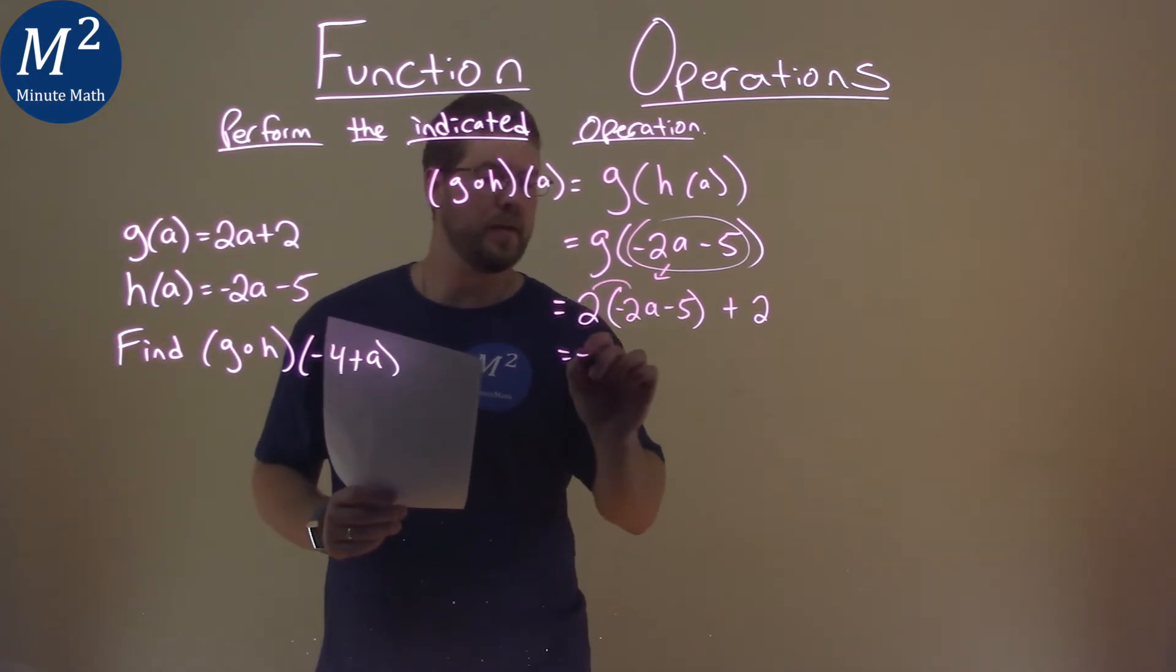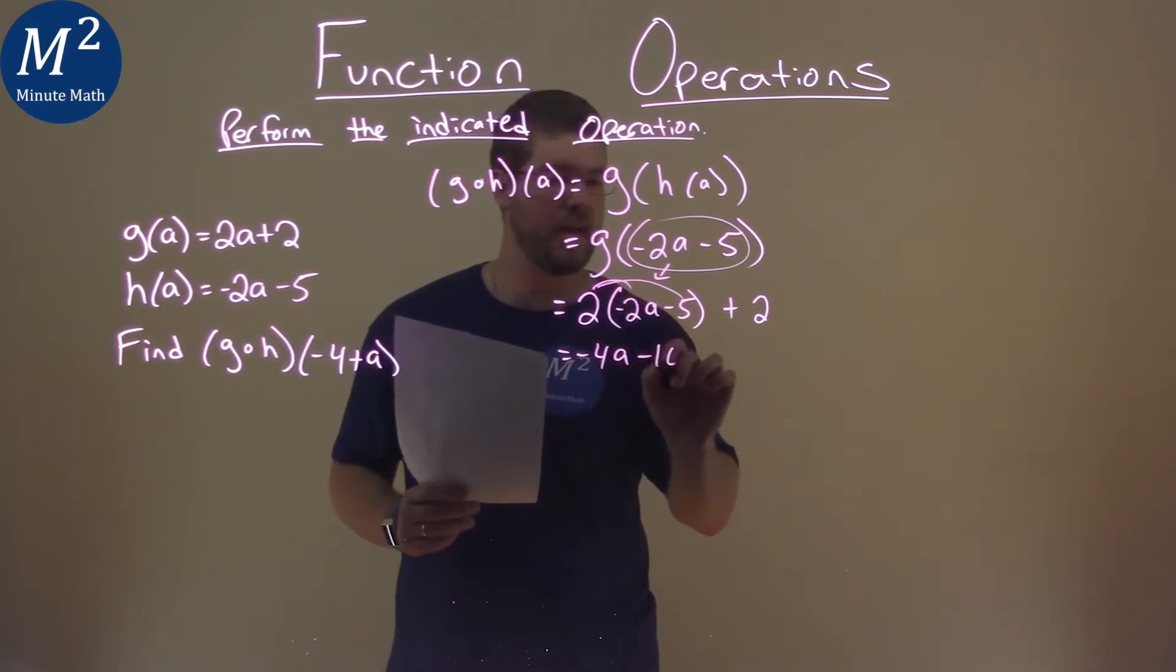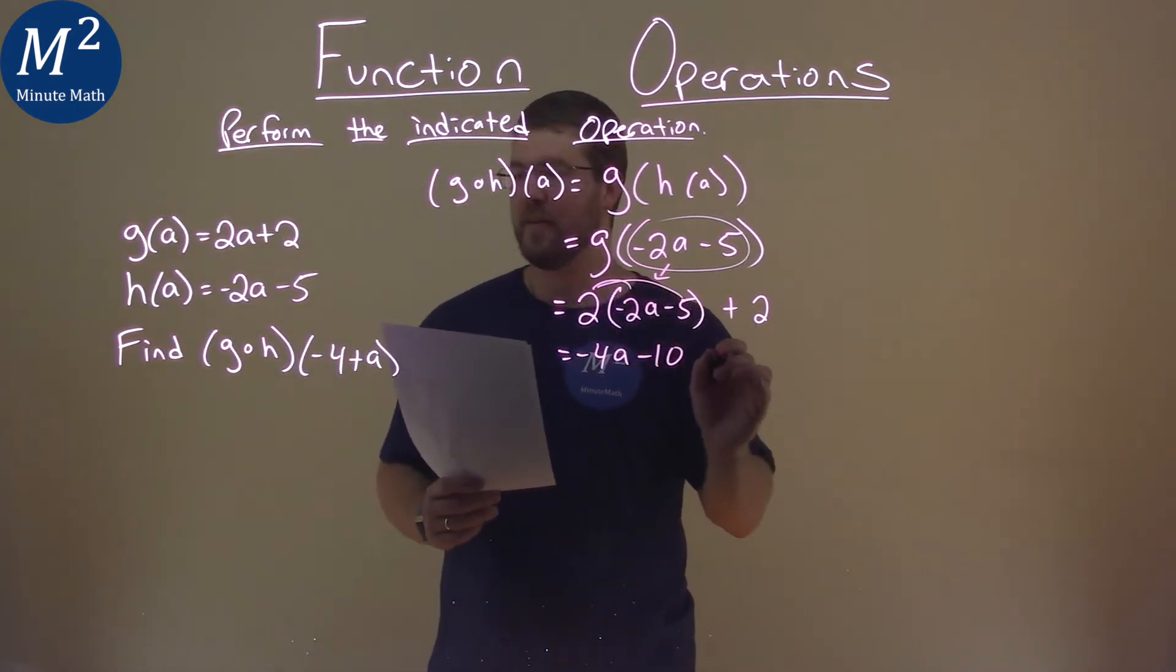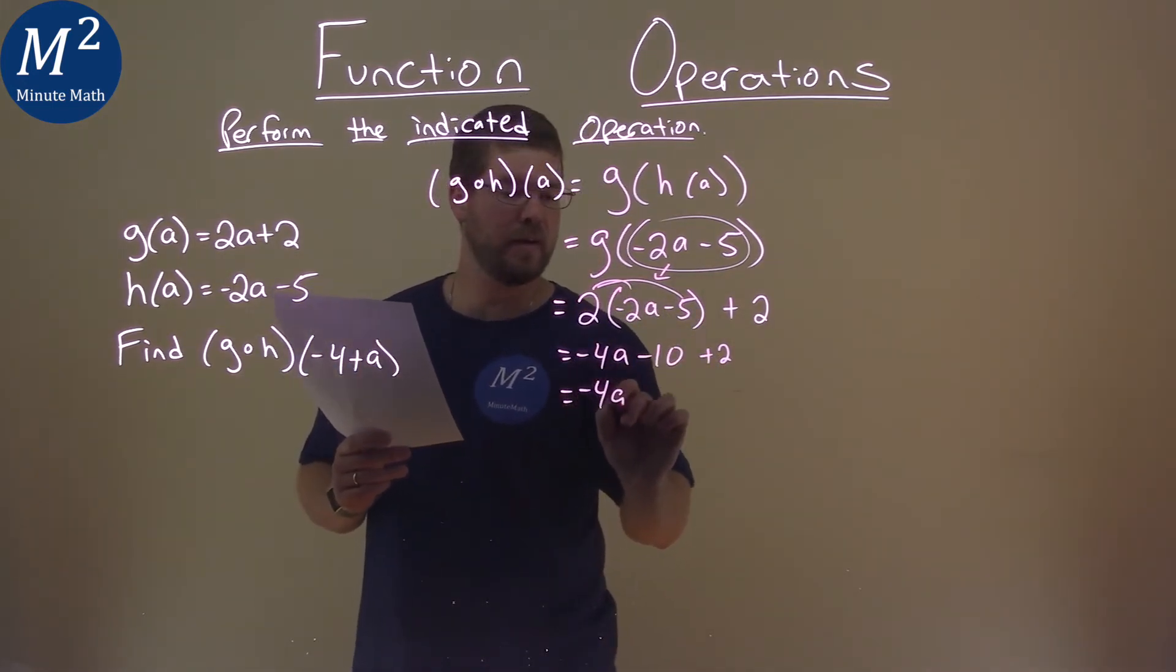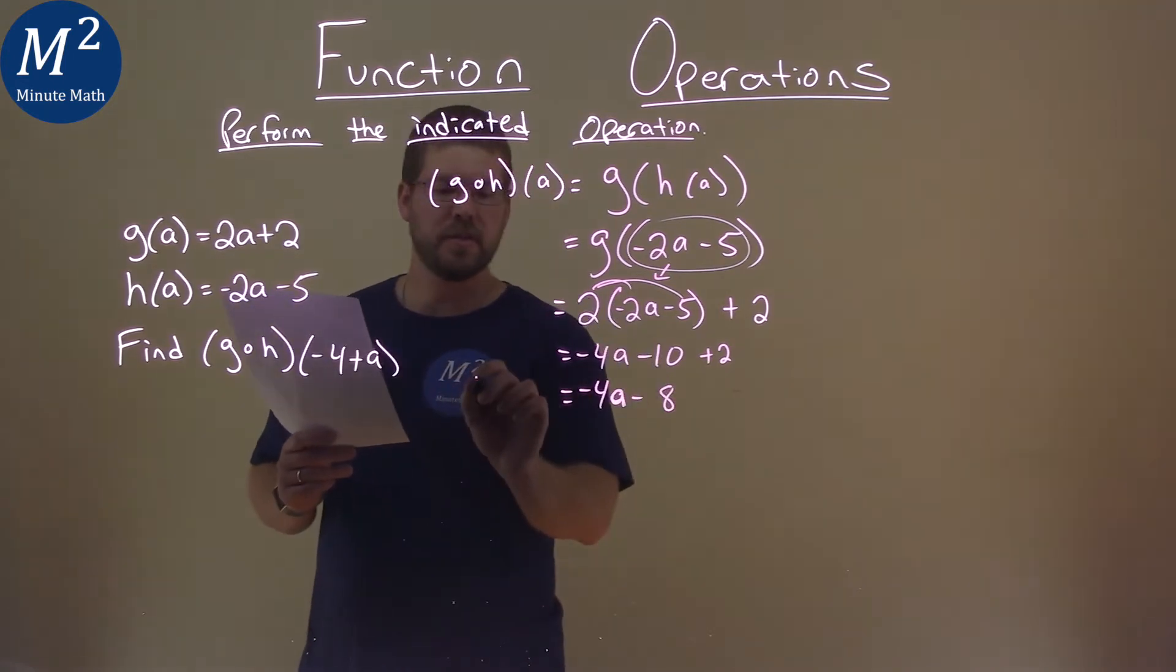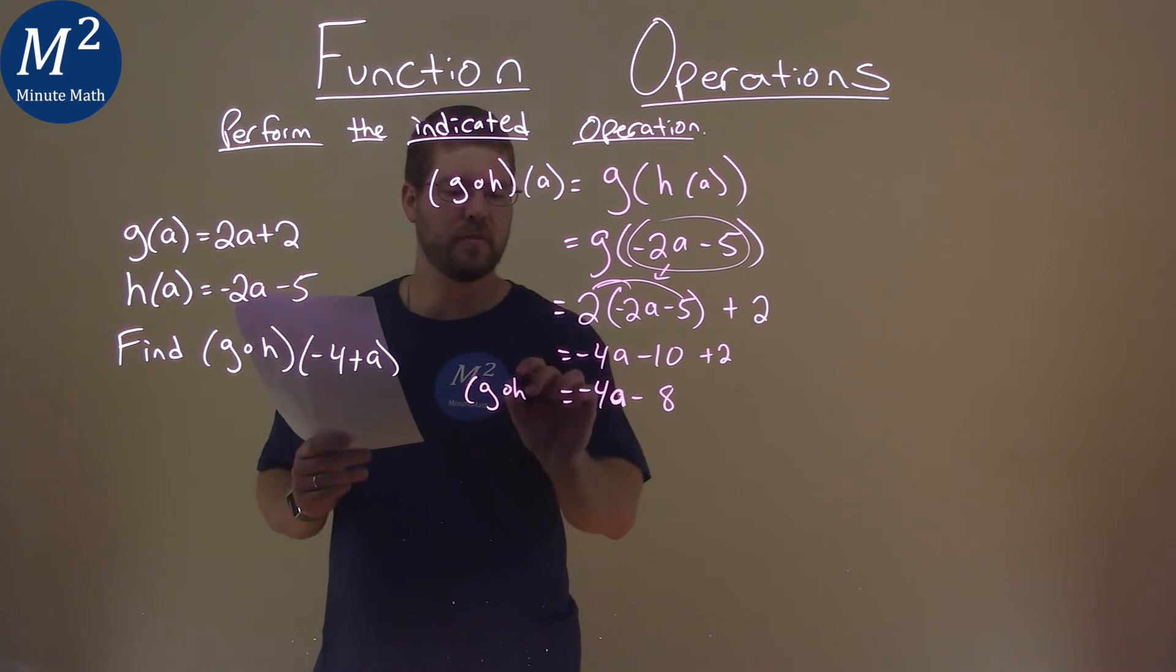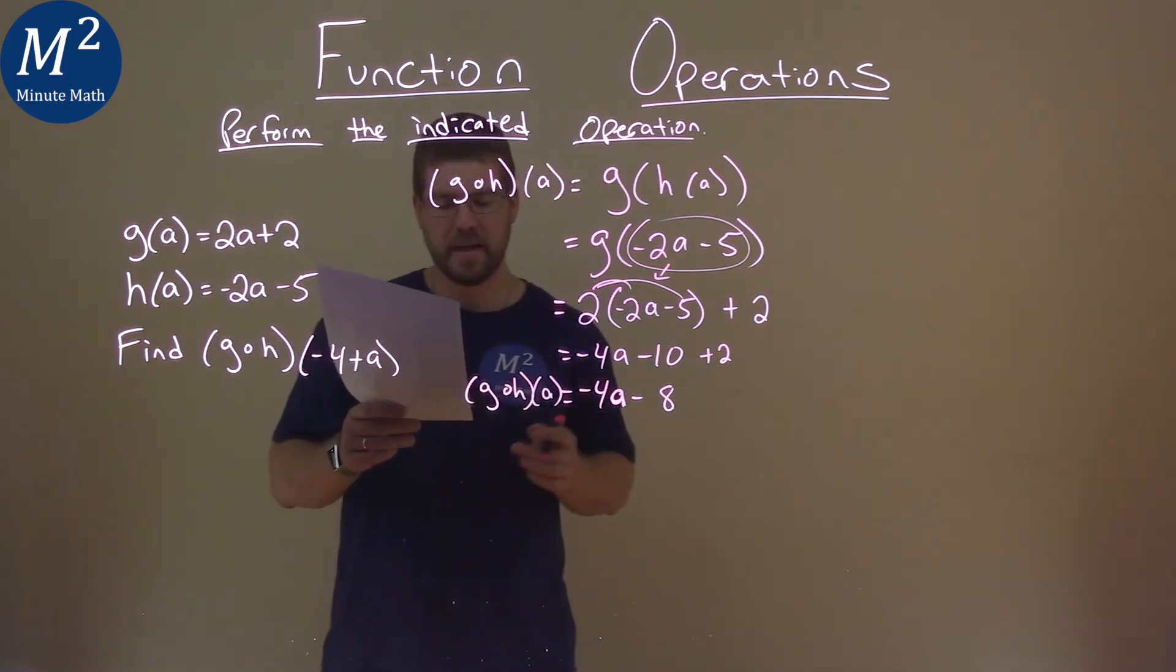2 times negative 2a is a negative 4a. 2 times a negative 5 is a negative 10, and we then have a plus 2. Let's keep this simplified. Negative 4a here, and negative 10 plus 2 is a negative 8. So our g of h of a is a negative 4a minus 8.